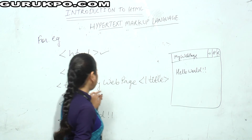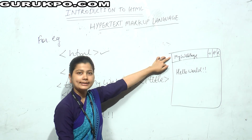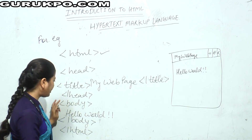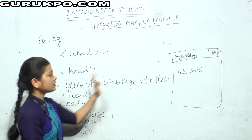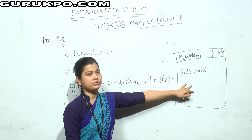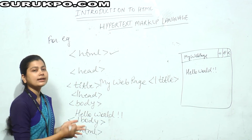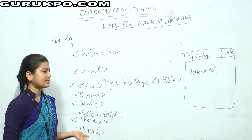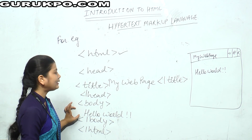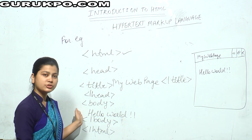The title part is displayed on the title bar of the browser, and the body part is displayed on the body of the web browser. This is the basic example of an HTML document — it simply displays the message.